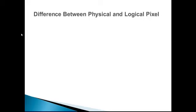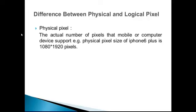Now we need to understand the difference between physical and logical pixel. What is a physical pixel? The actual number of pixels that a mobile or computer device sports. For example, the physical pixel size of the iPhone 6 Plus is 1080 by 1920 pixels.